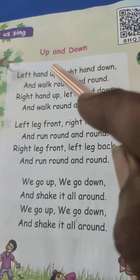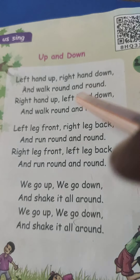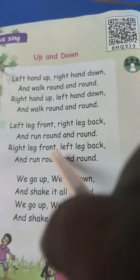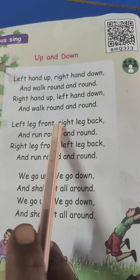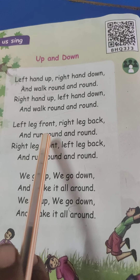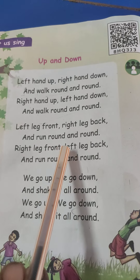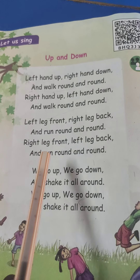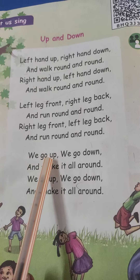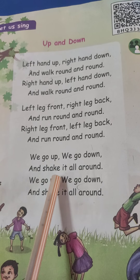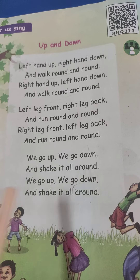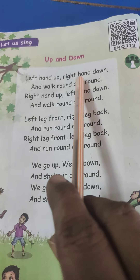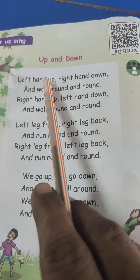Right hand up, left hand down. And walk round and round. Left hand up, right hand up, left hand up. And walk round and round. We go up, we go down and shake it all around. We go up, we go down and shake it all around. This is the song today we sing. The topic of the song is Up and Down.